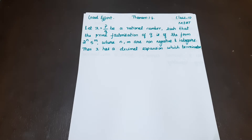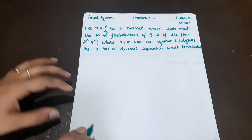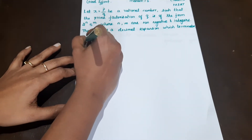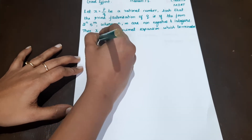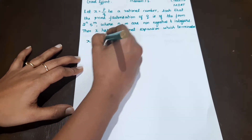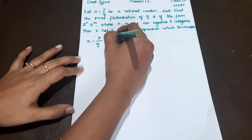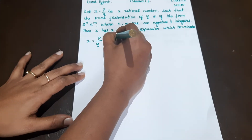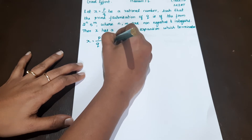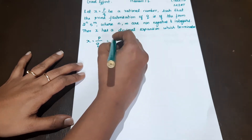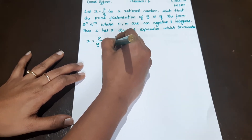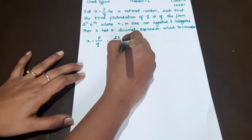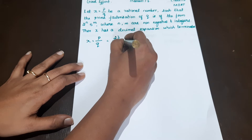So let's see an example for Theorem 1.6. Here x = p/q. Let's take p as 23 and q as 2 raised to the power 2, 5 raised to the power 2.